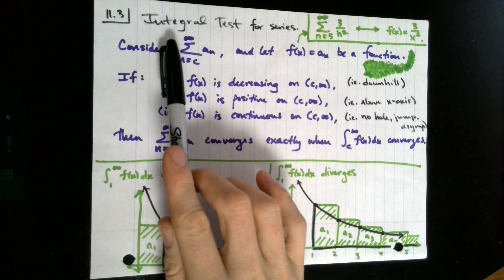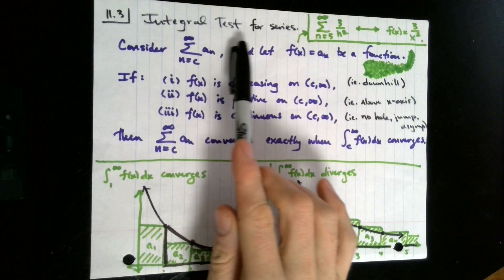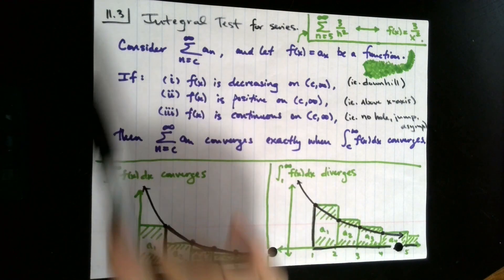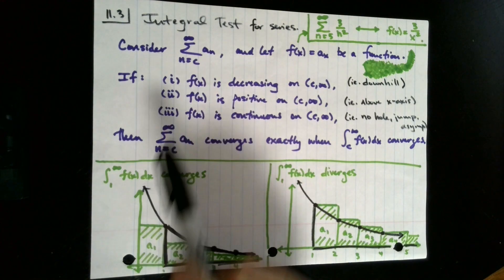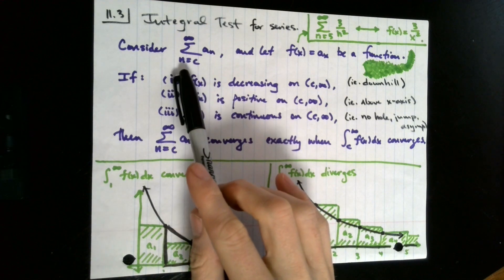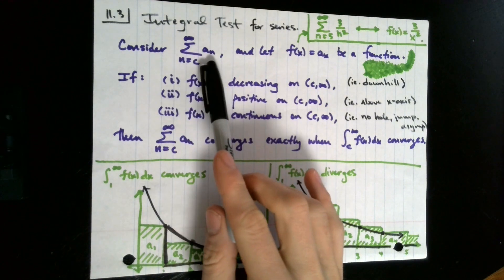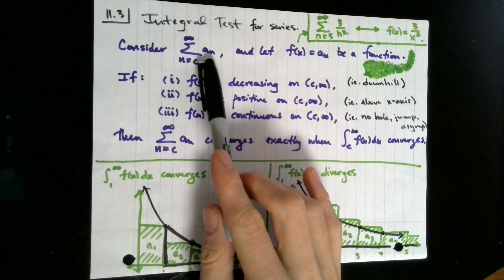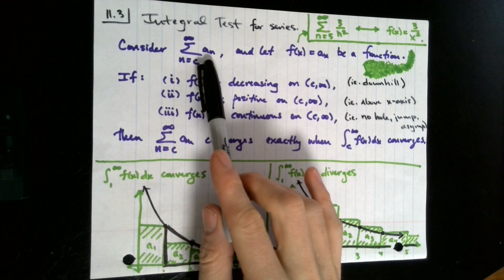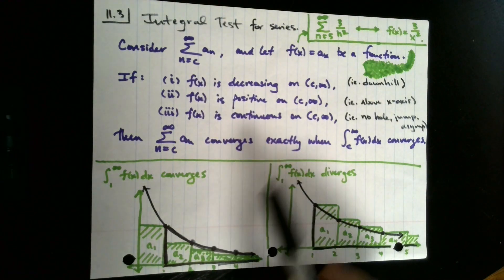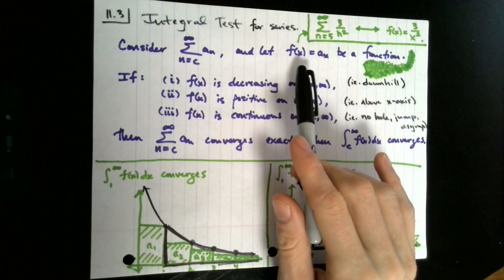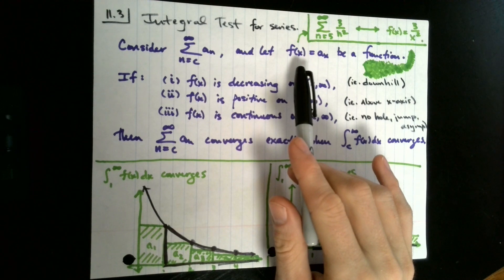Today we're going to look at the integral test for series. This is coming from section 11.3 in our book. We're going to start with a series — imagine we've got a sum from n equals c to infinity of some term a_n. This is just a sum of an ordered collection of infinitely many numbers. We're going to create a function that is associated with the terms of our series.